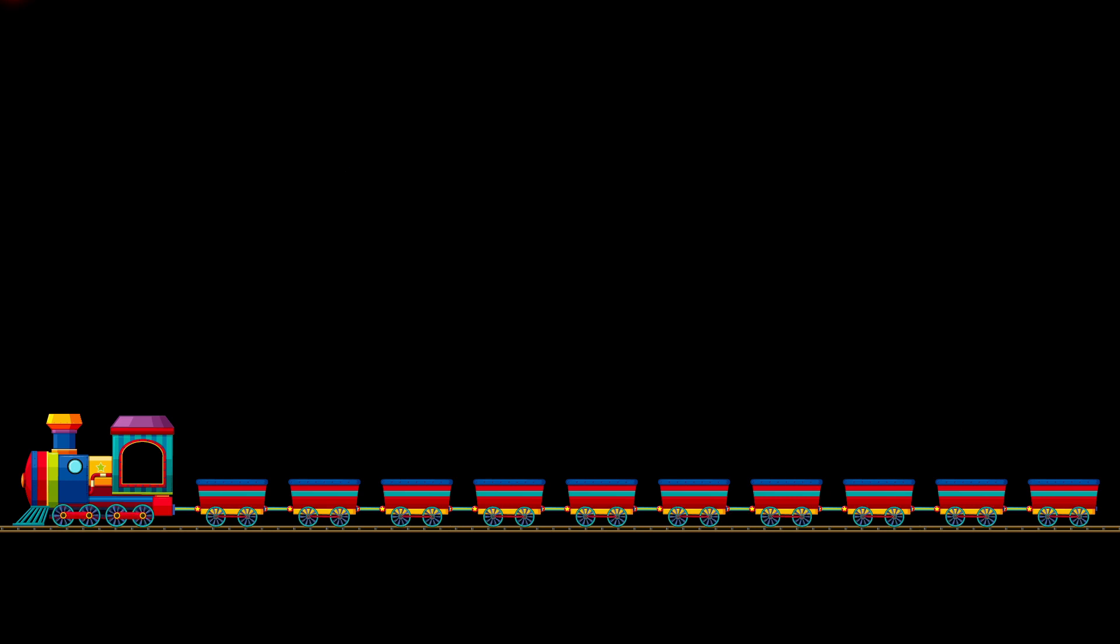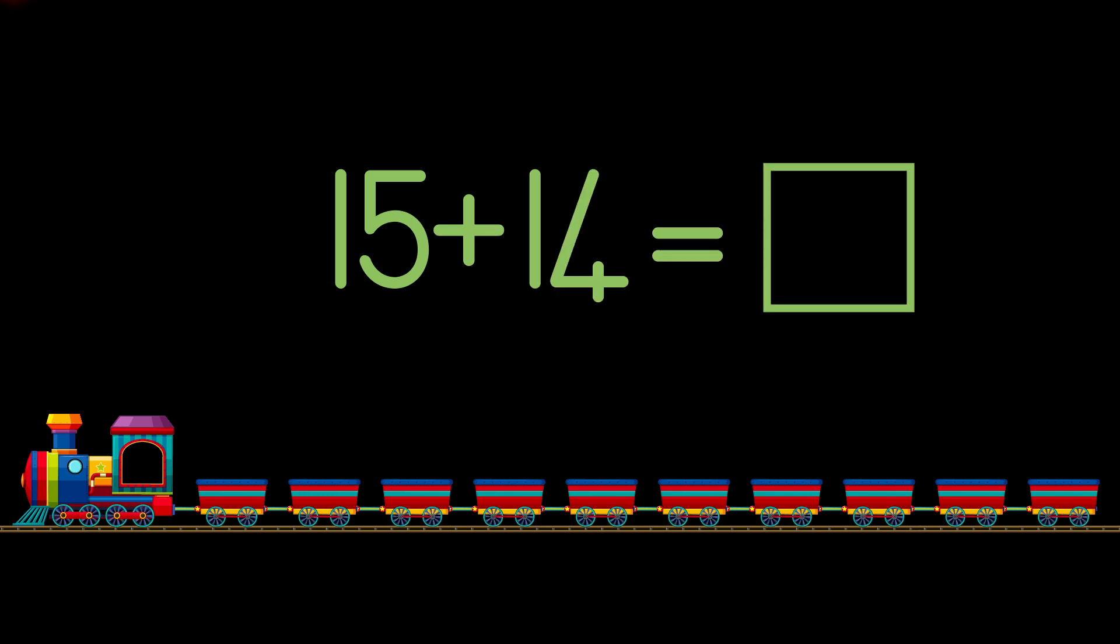We're going to start with the following sum: 15 plus 14. So 15 will be our first number and 14 will be our second number. When we do the sum we will break up one number and leave the other unchanged.